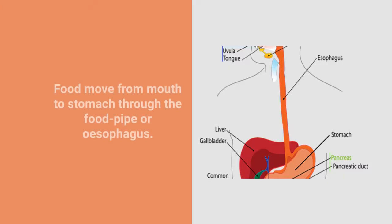If students correlate their daily eating experience with this description, they will be able to understand how digestion starts. Then the food moves from the mouth to the stomach through a food pipe called the esophagus — they know there is a food pipe connecting the stomach to the buccal cavity or mouth.